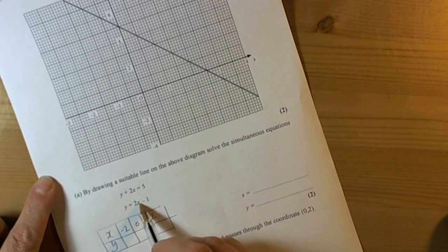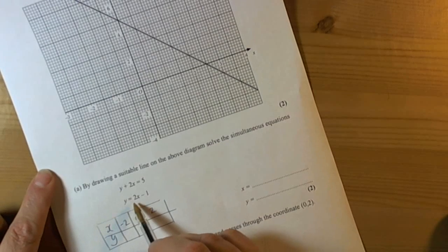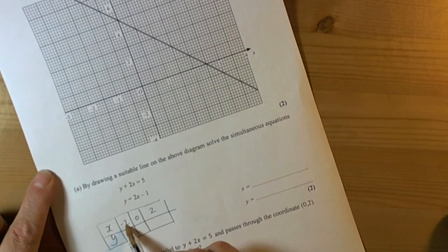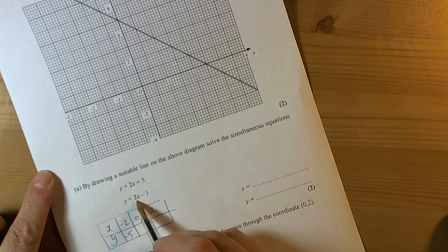The function says that we're going to double the x value and take away 1 to get the y answer, or the y coordinate. So double minus 2 is minus 4, take away 1 is negative 5. Double 0, take away 1, is minus 1. And double 2, take away 1, is 3.